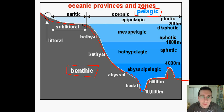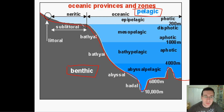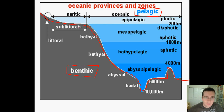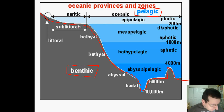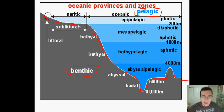Coral reefs require carbonate-rich, nutrient-poor water. Too many nutrients will interfere with the formation of carbonates. So coral reefs only exist in nutrient-poor sublittoral zones, but they still need to be shallow enough for sunlight to reach them, because coral lives in symbiotic relationships with algae. In coral reefs, the algae gets nutrients from the coral, and the coral gets food from the algae — that's the beautiful symbiotic relationship.